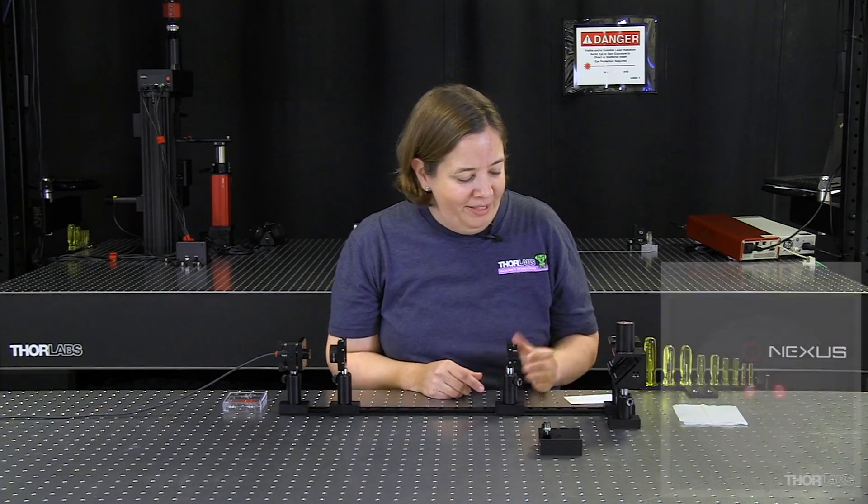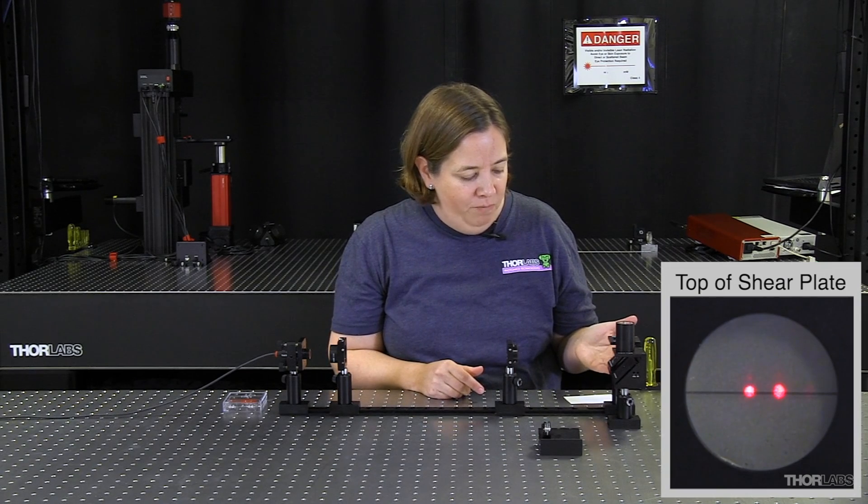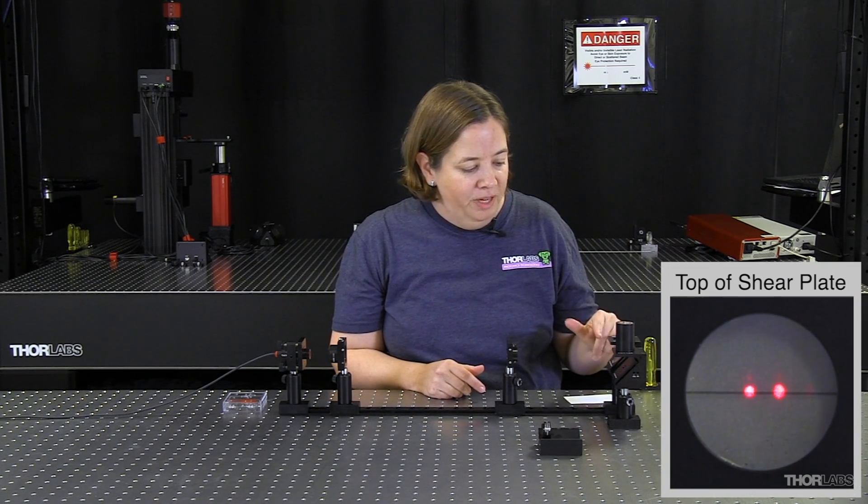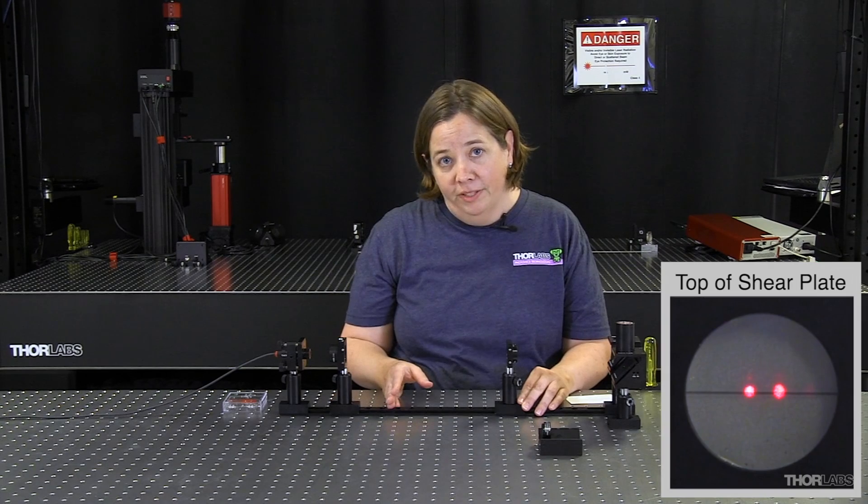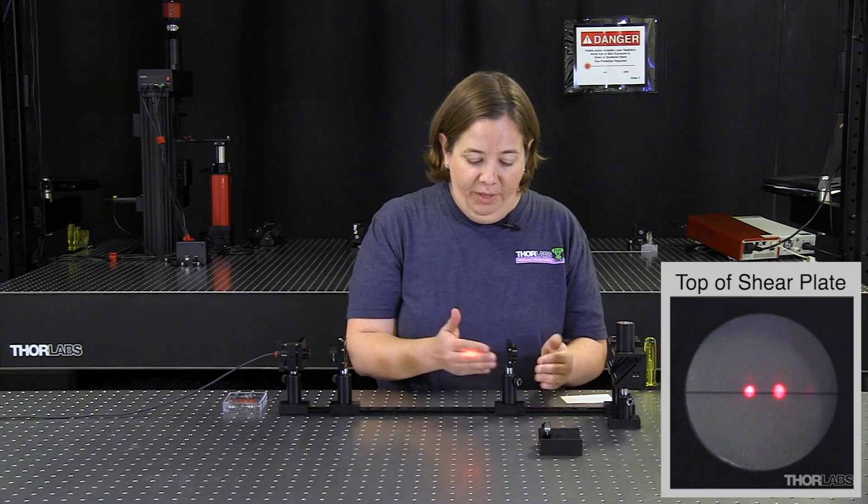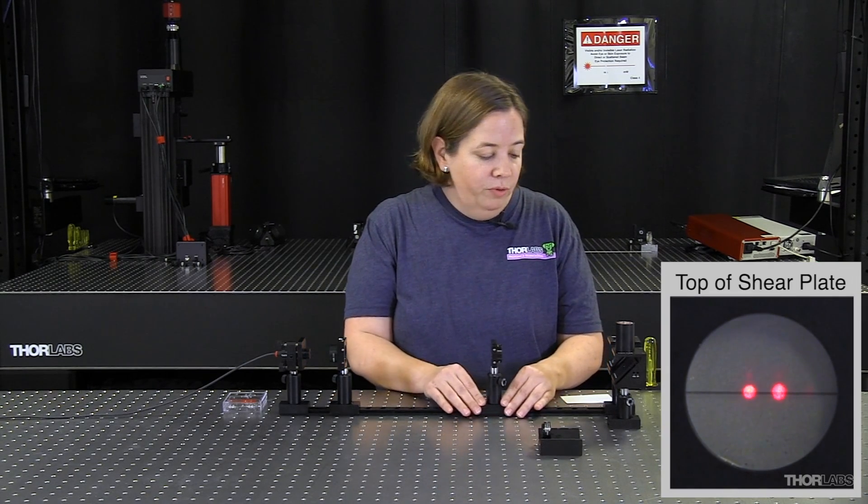Alright, so as expected, I have a smaller beam coming in here right now. And the two reflections off of this thick plate are not overlapped. So I'm not seeing any interference.